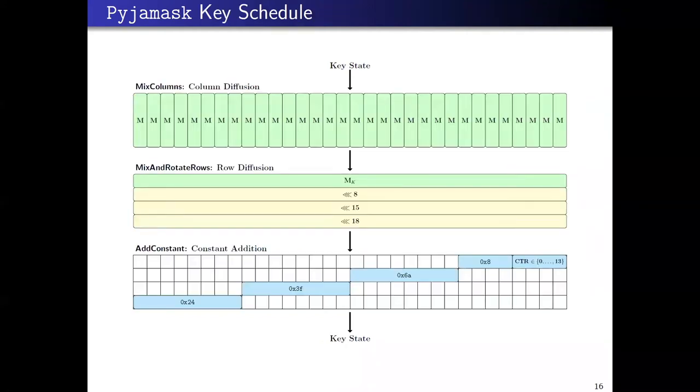For the key schedule, it's the same for both variants. We have the mix column, which is done vertically. For the mix and rotate rows, only the first row applies a diffusion layer. For the other three rows, we have rotation. Finally, we have add constant to break the symmetry in the key schedule.